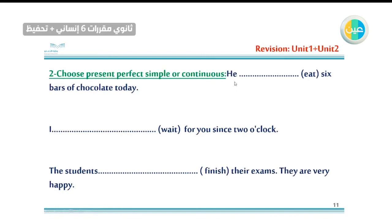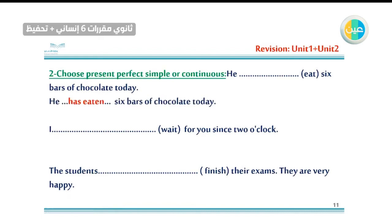'He eat six parts of a chocolate today.' Quantity — result. Present perfect simple. He has eaten. The verb in the third form — past participle: eat, ate, eaten. He has eaten six pieces of chocolate today.